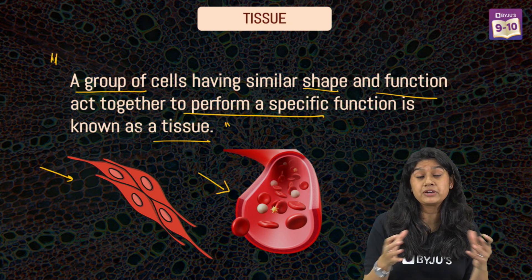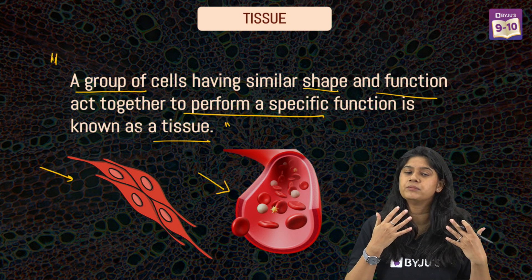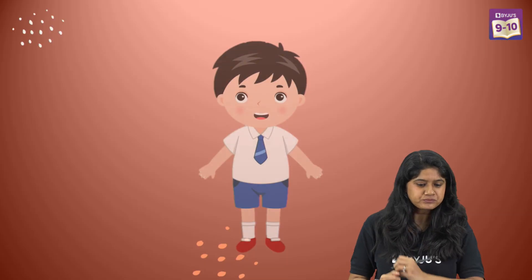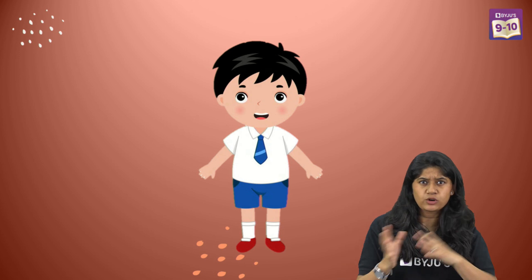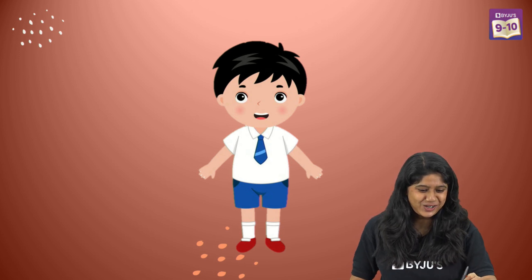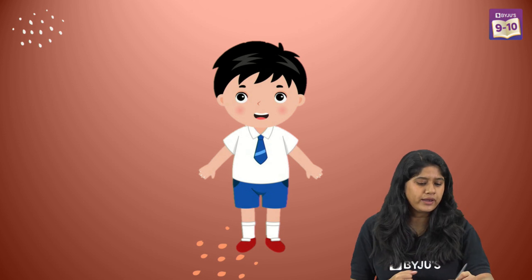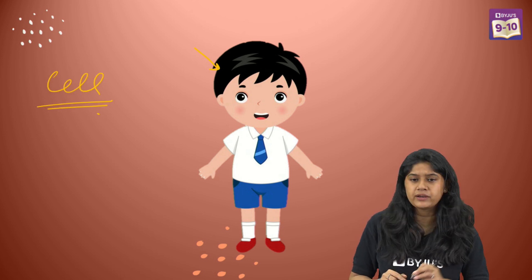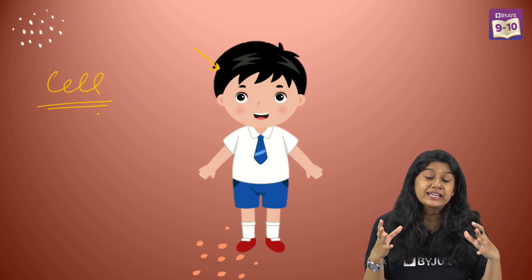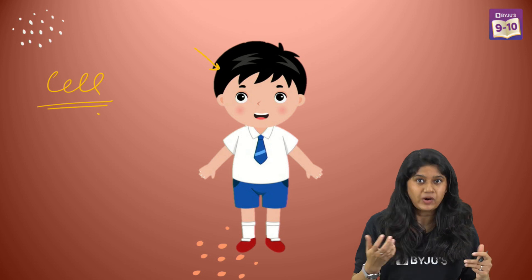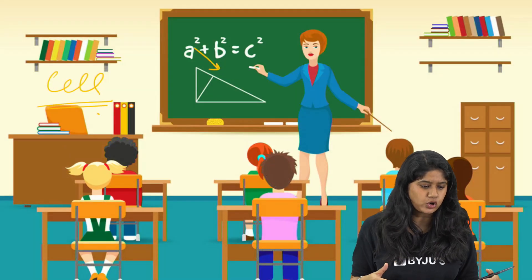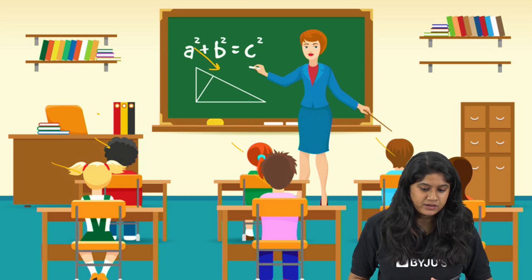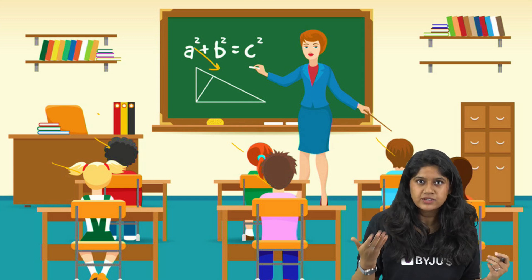Now let's understand how tissues come together to form other important organs. We will use an analogy. Over here we have a boy — we can compare this boy with a single cell in a body. He is a student, and we are just comparing him to the cell. Now where do students sit in school? They sit in a classroom. So different students in a class come together and form a tissue.